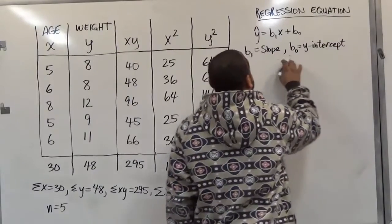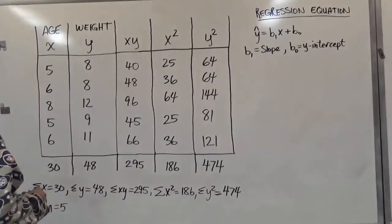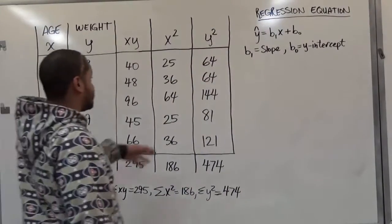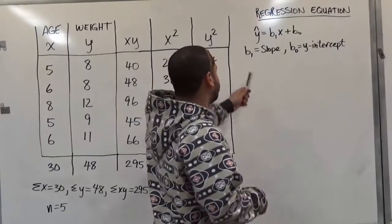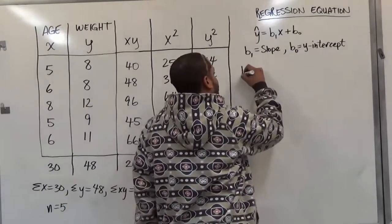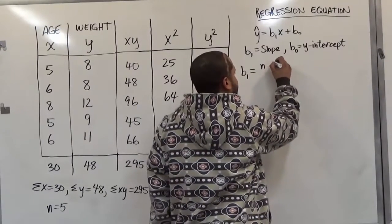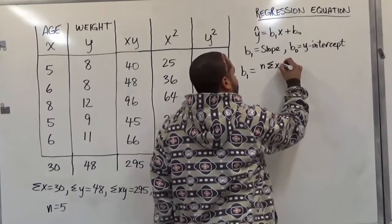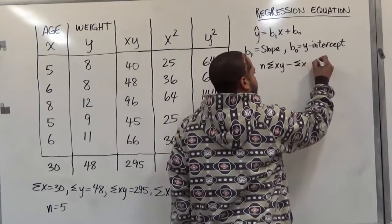To calculate these two values, there are two equations we can use that contain these sums to assist us so we can get the b1, the slope, and also the b0, the y-intercept. The equation for the slope is similar to the correlation equation with minor differences. The numerator is the same as the correlation coefficient, n times the sum of xy minus the sum of x times the sum of y.